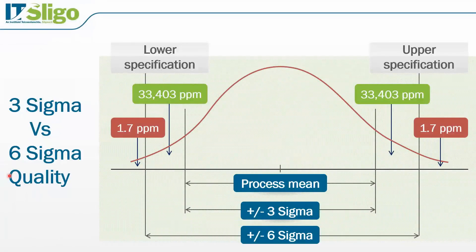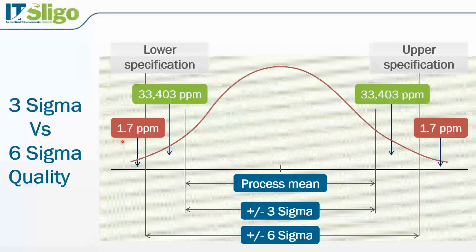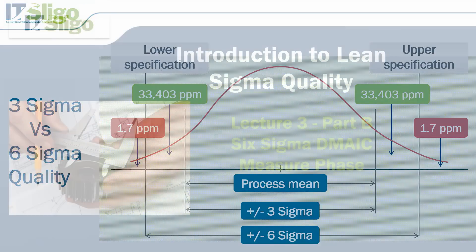Looking at Sigma levels: we have three Sigma versus six Sigma quality. This is a normal distribution curve, which we'll look at in more detail later. It shows the distribution of product — our target is in the center, for example 30mm diameter for the pen holder. Some parts will be wider and some narrower, and some will fall outside the specification limits. In a Six Sigma process, you have 1.7 + 1.7 = 3.4 parts per million defects. Very few companies operate at Six Sigma — the airline industry is probably one example. A three Sigma process generates over 66,000 defects: 33,400 on the lower end and 33,400 on the upper end.